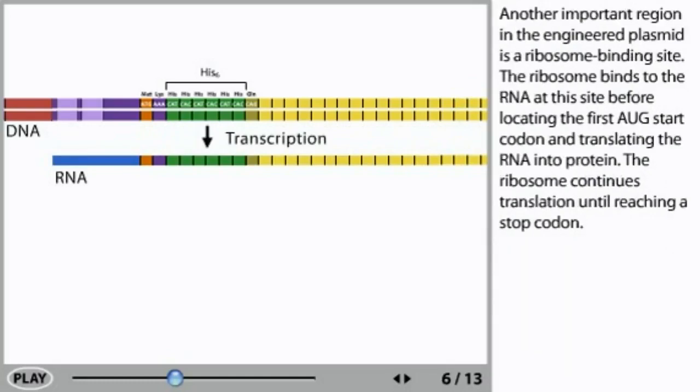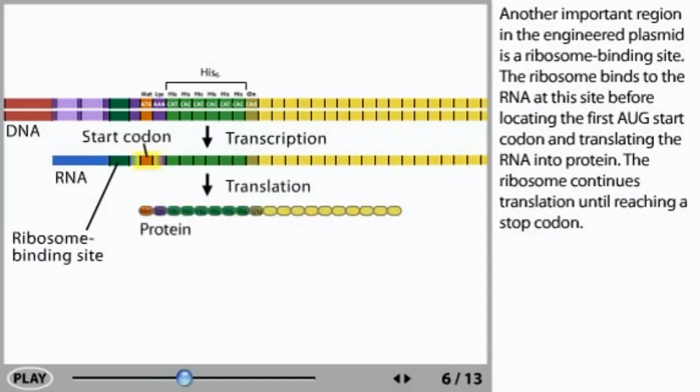Another important region in the engineered plasmid is a ribosome binding site. The ribosome binds to the RNA at this site before locating the first AUG start codon and translating the RNA into protein. The ribosome continues translation until reaching a stop codon.